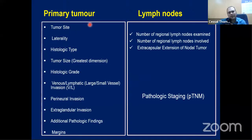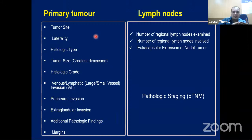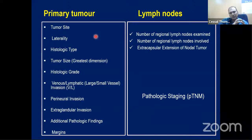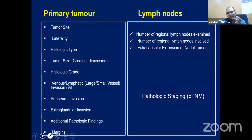After surgery, a detailed histopathology report is needed to decide adjuvant treatment. Key parameters include: primary site, laterality, histological type, tumor size, histological grade, margin status, perineural invasion, lymphovascular involvement, lymph node involvement with which regions, and any extracapsular extension. Staging is similar to squamous cell carcinoma criteria: less than 2 cm is pT1, 2-4 cm is pT2, more than 4 cm is pT3.